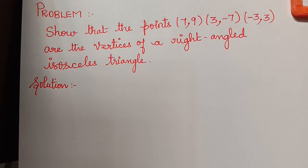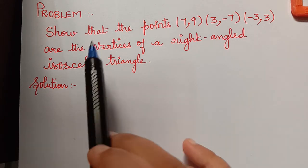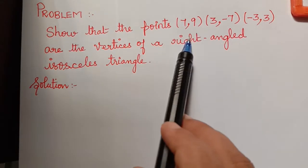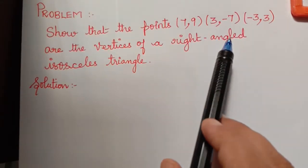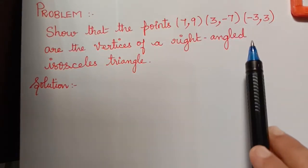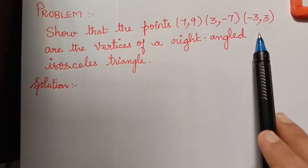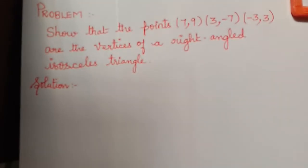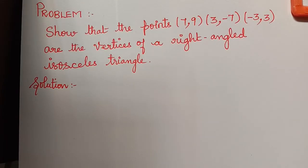Hello students. The next problem under the topic coordinate geometry is: show that the points (7,9), (3,-7), (-3,3) are the vertices of a right-angled isosceles triangle.